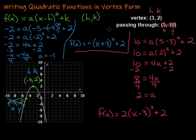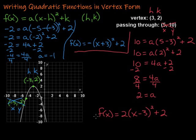Writing quadratic functions in vertex form — the key is we need the vertex, and we need another point that's on the graph. Sometimes they might be given as part of a graph, sometimes they might just be given. Our first step is we've got to solve for a — figure out what a is. Once we get a, we plug in a, h, and k, and there's your function. I hope that was helpful. Keep working hard on your math — you can do it.